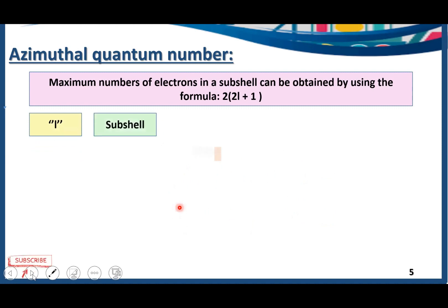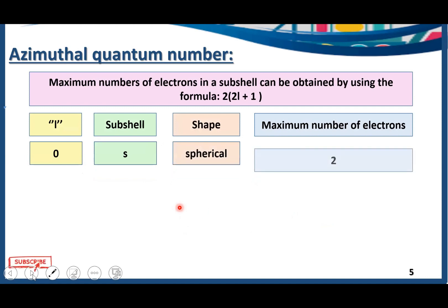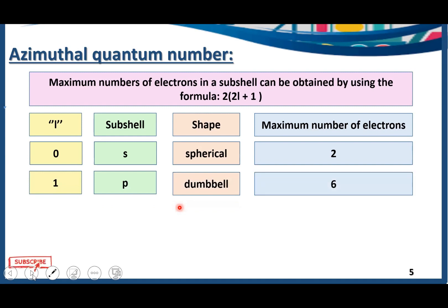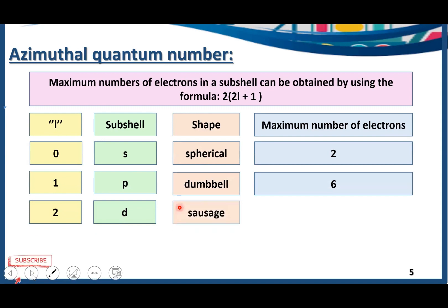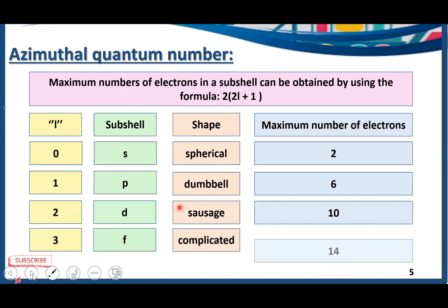Summarizing the values of l, subshell shape, and maximum electrons: l equals 0 is the s subshell with a spherical shape and a maximum of 2 electrons. l equals 1 is the p subshell with a dumbbell shape and a maximum of 6 electrons. l equals 2 is the d subshell with a sausage shape and a maximum of 10 electrons. l equals 3 is the f subshell with a complicated shape and a maximum of 14 electrons.